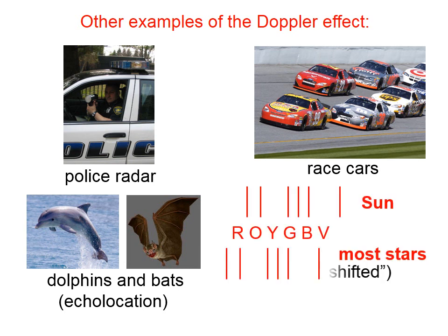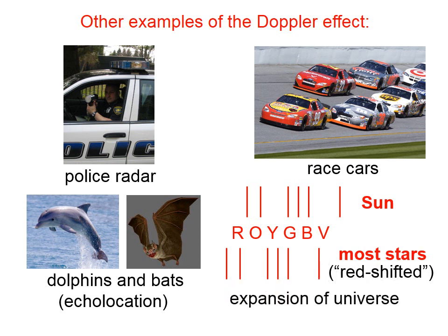Another example of the Doppler effect is related to the expansion of the universe. Light from the sun shows particular frequencies in particular regions. When we analyze the light from most stars, it's very similar to the sun — the pattern is basically the same — but the whole pattern has been shifted towards red. The only reason that could be happening is that we and those stars are moving away from each other. This is one of the main supports for the fact that the universe is not static, but is expanding.